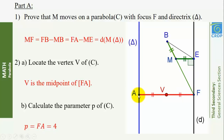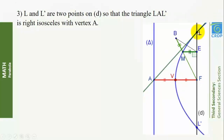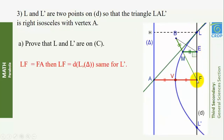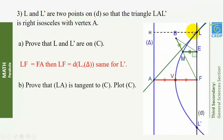L and L' are two points on D so that triangle LAL' is a right isosceles with vertex A. Prove that L and L' are two points on C. Since LF = FA, then LF equals the distance from L to delta; therefore L is equidistant from F and delta, so L is on C. Same for L'. Prove that AL' is tangent to C: AL' is the anterior bisector of angle FLH, where H is the orthogonal projection of L on delta, according to the tangent property of a parabola.